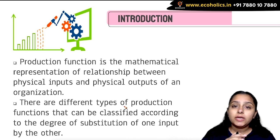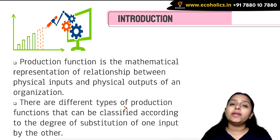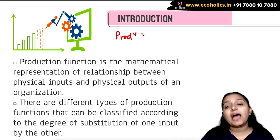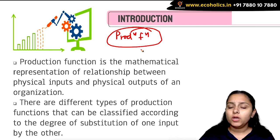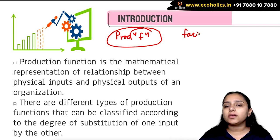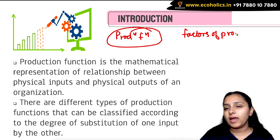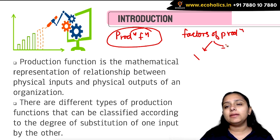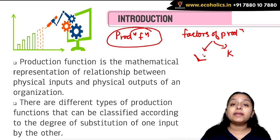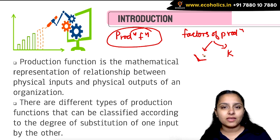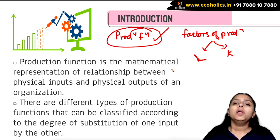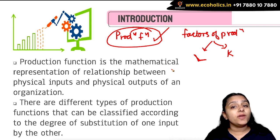So what is essentially a production function? Production function is that equation — I'm calling it an equation because it is going to be mathematical — which brings out the relationship between our output and factors of production. We have two factors of production: labor and capital, which we use for producing our output. How these labor and capital units are involved and hence giving our output, that relationship is told by the production function.